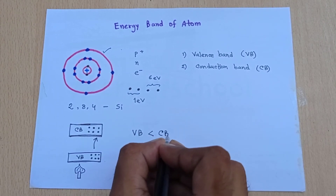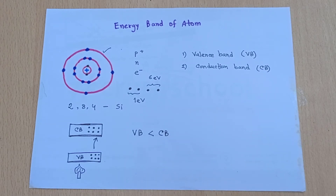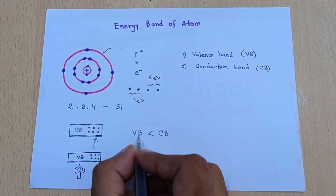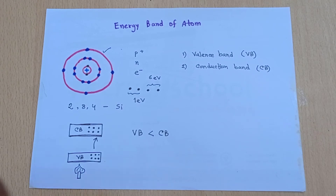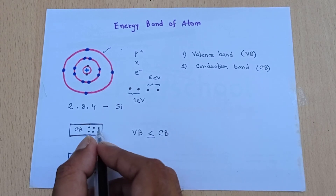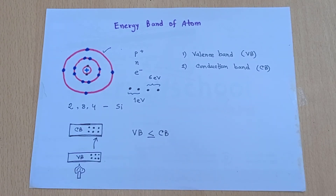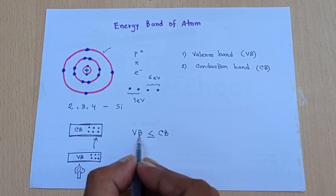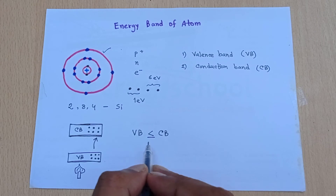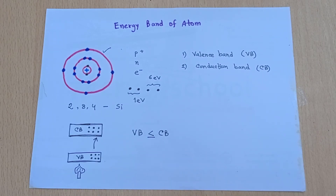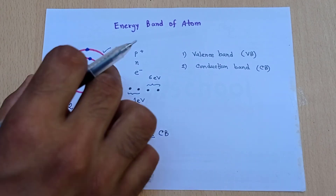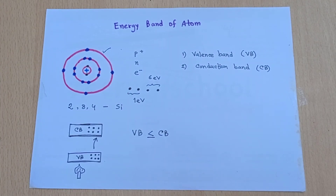Sometimes the valence band electron energy level can be equal to the conduction band energy level, in which case the electron can easily pass from one atom to another. The relationship is: valence band energy level is less than or equal to the conduction band energy level. There is no case where the valence band energy level is greater than the conduction band energy level.